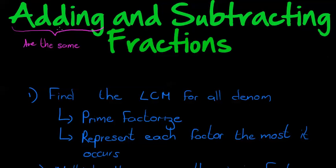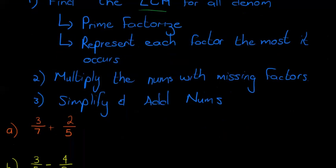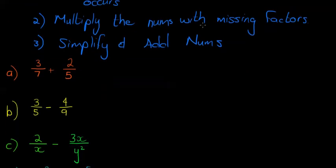So let's look at some examples where we're adding and subtracting fractions from each other. Remember, we can only add anything when they are the same when it comes to fractions. The denominator tells me what I'm working with, so it's the denominator that I'm trying to get the same. I do that by finding the LCM, the lowest common multiple for all the denominators. I do that by prime factorizing and representing each factor the most number of times it occurs.